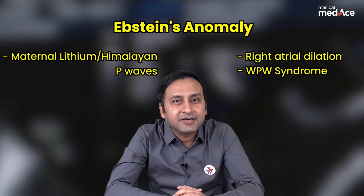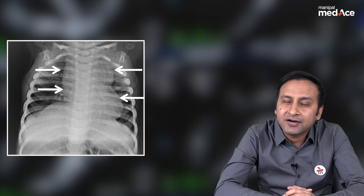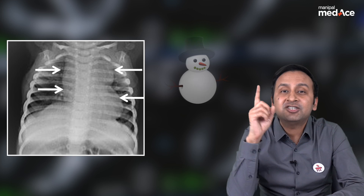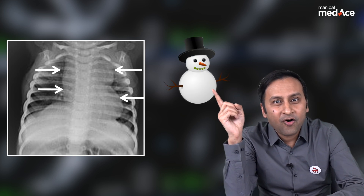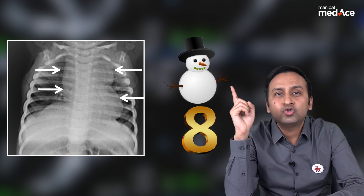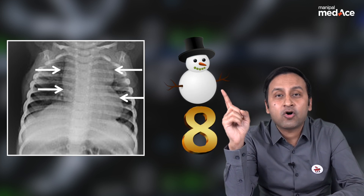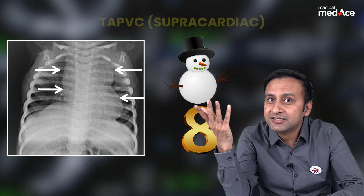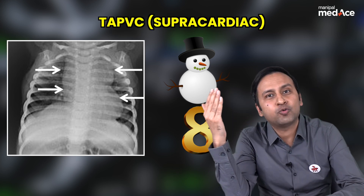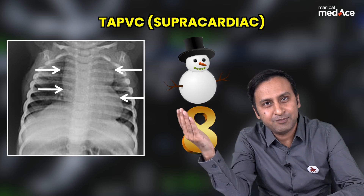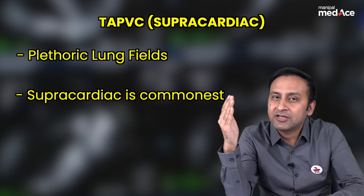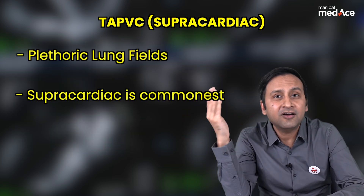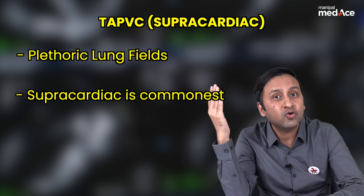Now let's have a look at our third case. Look at the heart — what is the shape of the heart looking like? This typical shape of the heart is that of a snowman or a figure of eight. S for snowman, S for supracardiac TAPVC. So snowman appearance of the heart is seen in supracardiac TAPVC. Look at the lung fields — they are also plethoric.